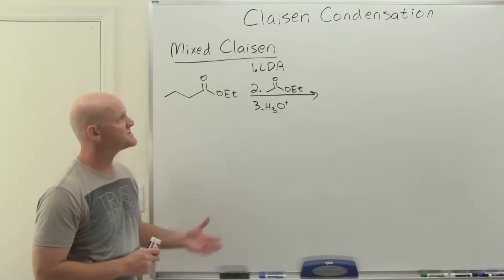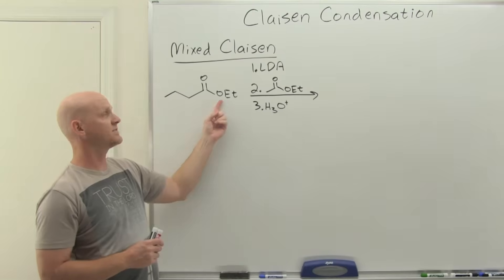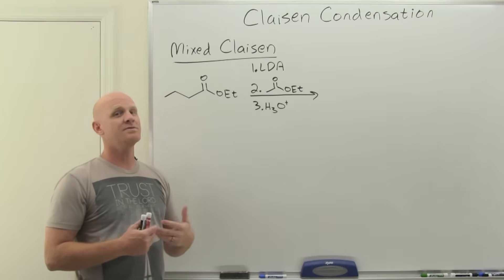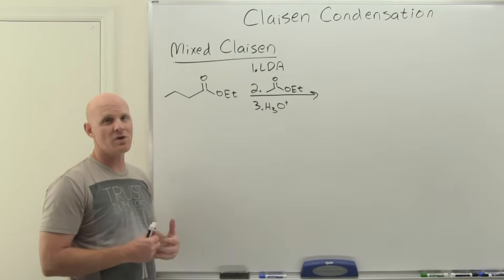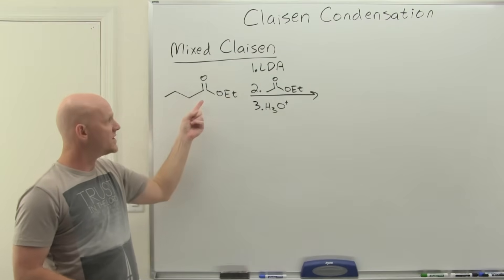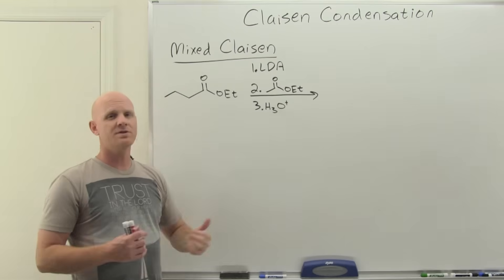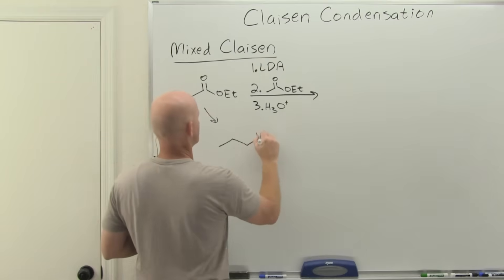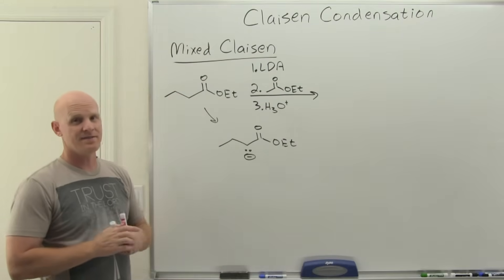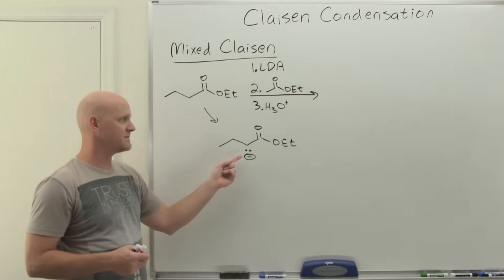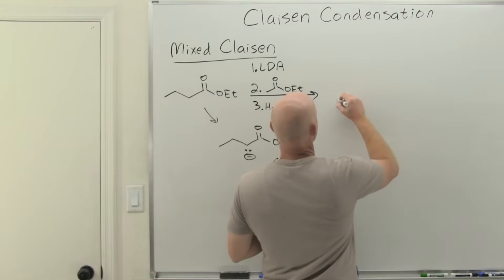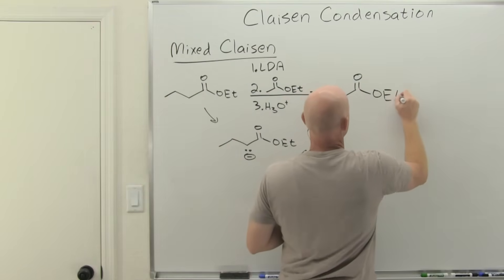With our mixed Claisen you really got to use LDA because if you just use sodium ethoxide or methoxide you're always going to get only a very small amount of your enolate formed and still have a lot of that ester left over. If we use LDA we're gonna 100% convert whatever ester you're using to an enolate. In this case this first one is gonna be 100% deprotonated at that alpha carbon to form the enolate. That enolate is the only nucleophile present and then we're gonna react it with this guy.